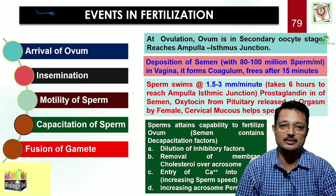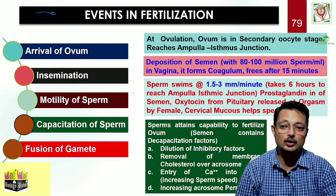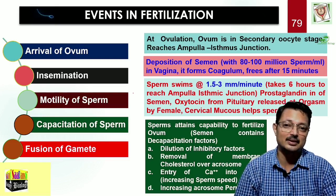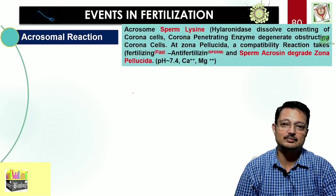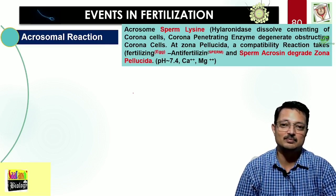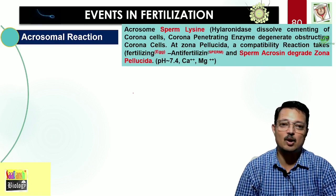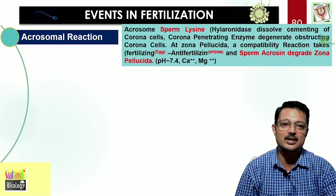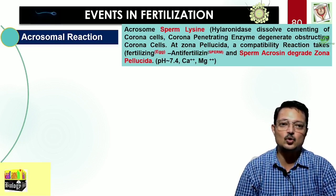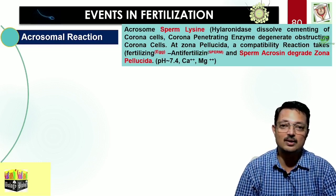Now come the events of fusion of gametes, with sub-stages. First, the acrosomal reaction. The acrosome lies anterior to the nucleus in the sperm and is made up of Golgi. It contains sperm lysins — the common name being hyaluronidase. The hyaluronidase dissolves the cementing of the corona cells. There are also corona penetrating enzymes that degrade the obstructing corona cells, allowing the sperm to reach close to the zona pellucida.